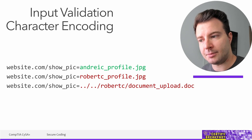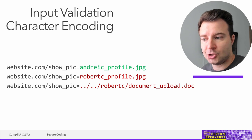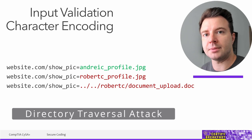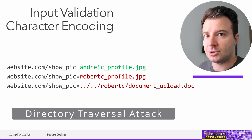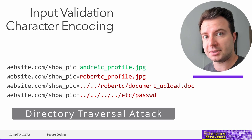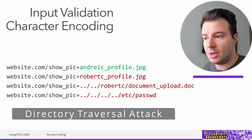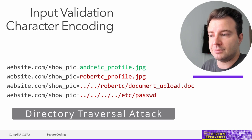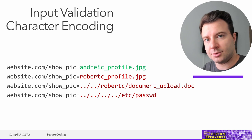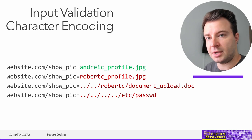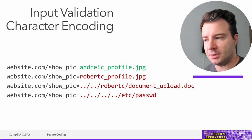Going further, instead of just specifying the file I want, I could try navigating the web server's file system to access files I should have no business accessing. This is called directory traversal — the ability to navigate through the file system to access different types of information. If it works, I can reach any location the web server application has privileges to access — for example, reading /etc/passwd, which gives a listing of all users and their privileges, a great first step in reconnaissance.